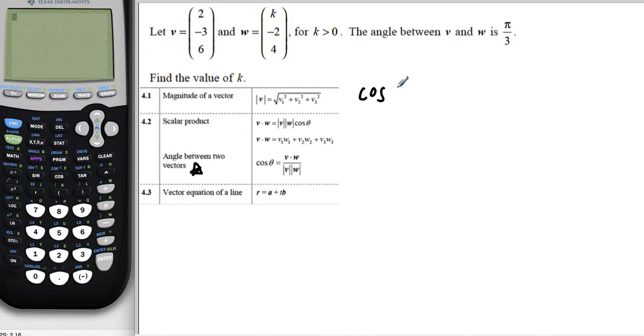Cosine of theta, which is pi over 3, is equal to the dot product, or the scalar product, of v and w. So it tells us here a rearrangement of the formula, but this is the one we're actually interested in having.